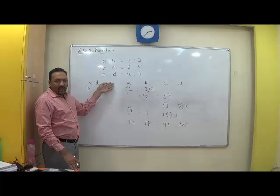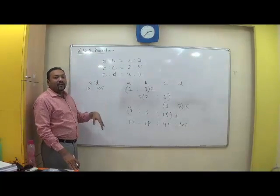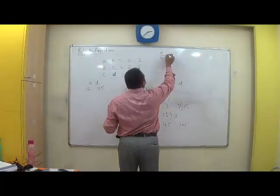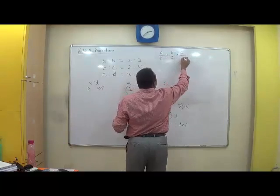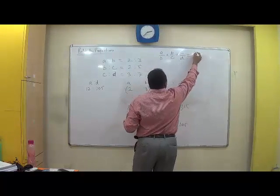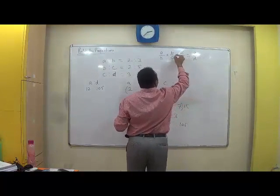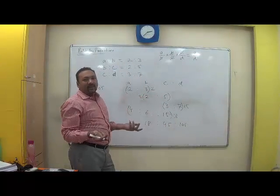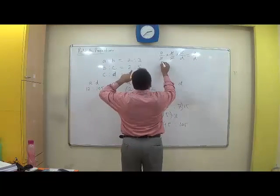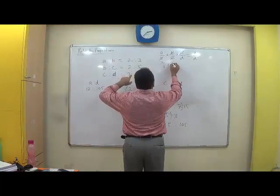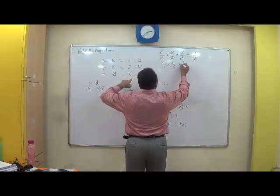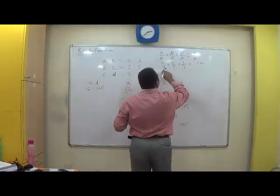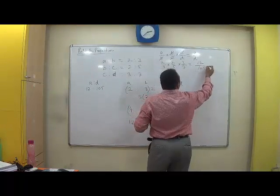In the same sort of question, another way of doing it can be A by B into B by C into C by D. Do you not get A by D? Simple. Put the values, 2 by 3 into 2 by 5 into 3 by 7. What do you get? 3 twos are 6, twos are 12, 7 twos are 35, twos are 105. That is the answer.